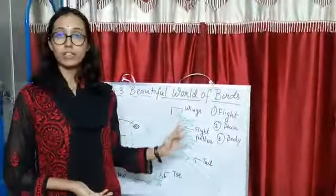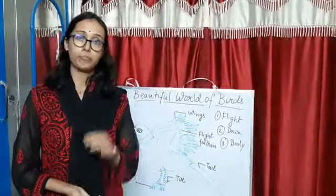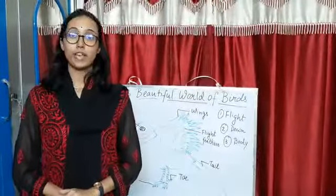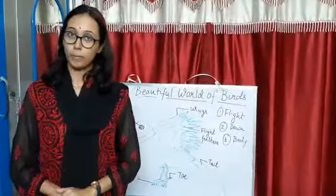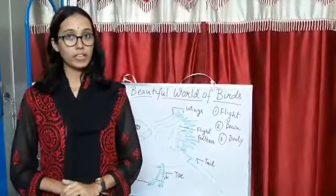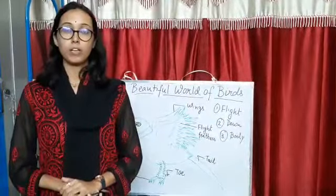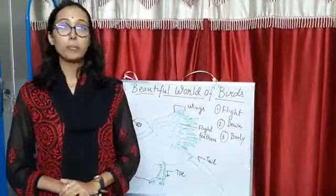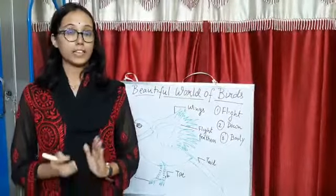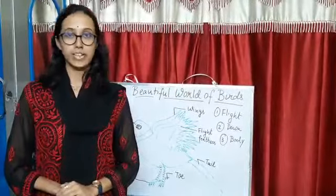These are the three types of feathers present in a bird's body. There are also some birds that do not fly at all. Due to their heavy body weight, they cannot fly and move with the help of their legs. Birds like ostrich, penguin, and kiwi cannot fly, and that is why they are known as flightless birds.